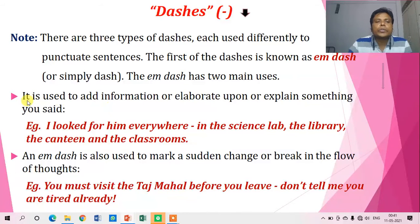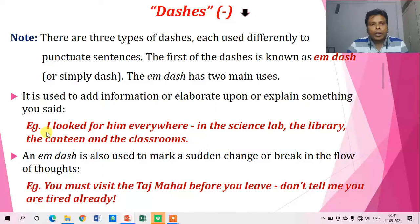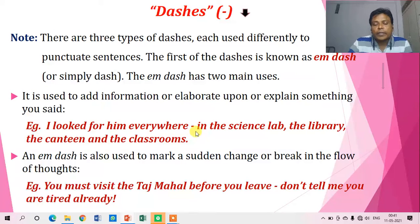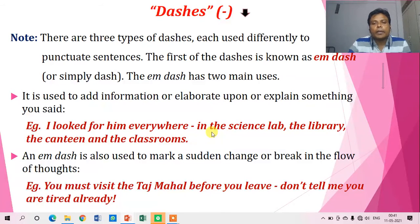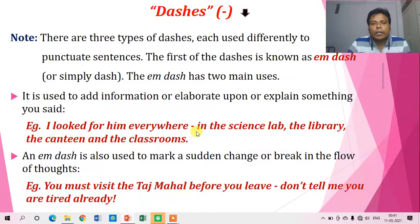The first use of the M-dash: it is used to add information, elaborate upon, or explain something you said. When I want to elaborate or give additional information, I use a dash. For example: 'I looked for him everywhere — in the science lab, the library, the canteen, and the classrooms.' Here, the dash elaborates on the meaning of 'everywhere.'